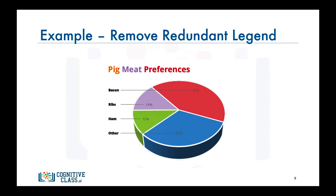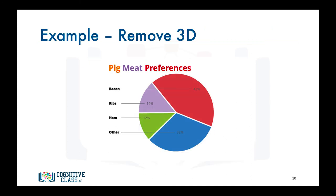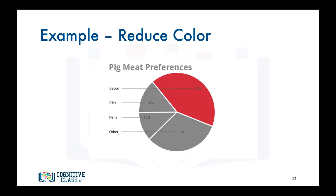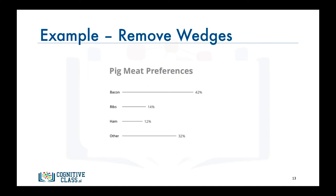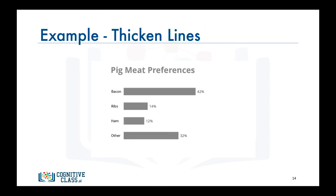3D isn't adding any extra information, so let's say bye to it. Text bolding is also unnecessary. And let's get rid of the different colors and the wedges. Whoa! What just happened? Well, let's thicken the lines to make them more meaningful. Now this looks a little familiar — yes, this is a bar graph after all, one with horizontal bars.